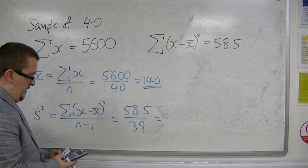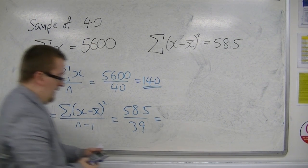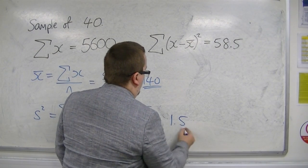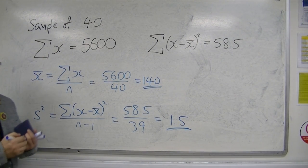So 58.5 divided by 39 is 1.5. So that would be your unbiased estimator for the variance.